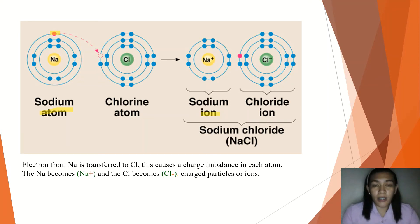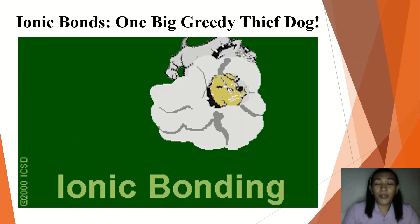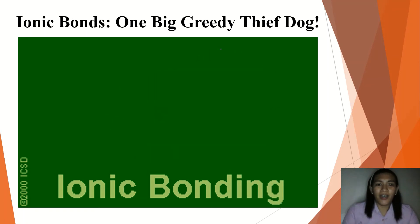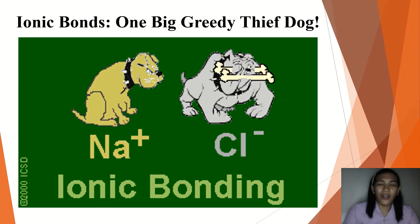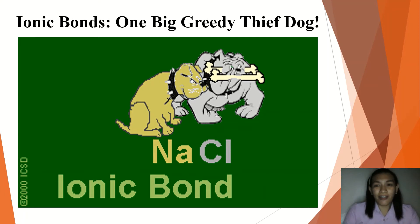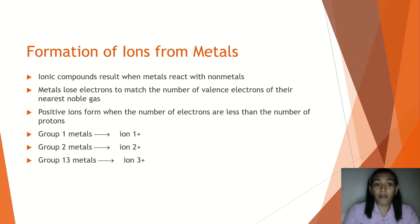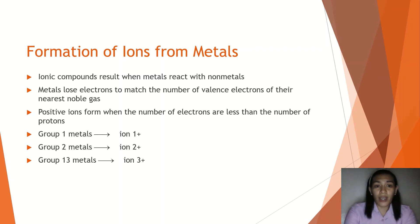Ionic compounds result when metals react with non-metals. Metals lose electrons to match the number of valence electrons of their nearest noble gas. Positive ions form when the number of electrons is less than the number of protons. For group 1 metals, they become ions with a positive 1 charge. For group 2 metals, they carry a positive 2 charge. For group 13 metals, you have positive 3.